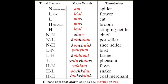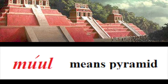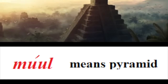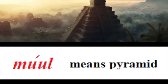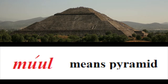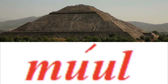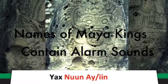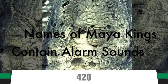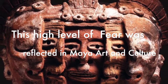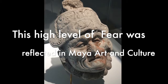Ancient Mayan further increased the intensity of alarm quality by adding a high or low tone to the long vowels. For instance, the word MUL, meaning 'pyramid,' has a long U sound produced in a higher tone. The intense distress sound in this case is the entire word MUL. As one can see, ancient Mayan language had a large number of words with alarm or distress parts in them.